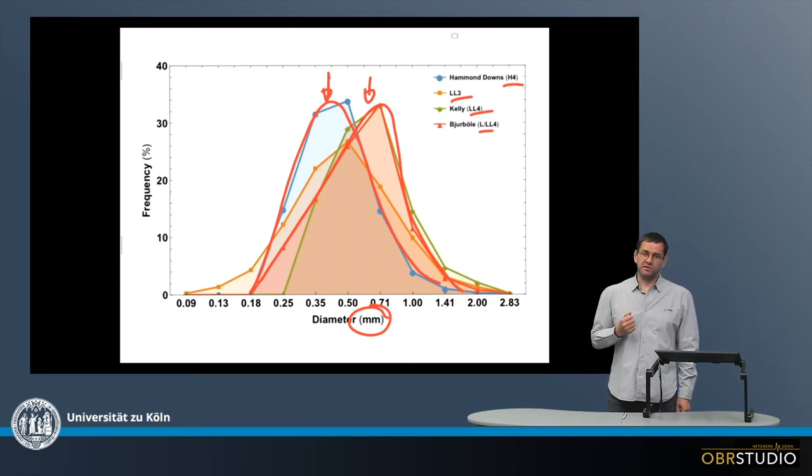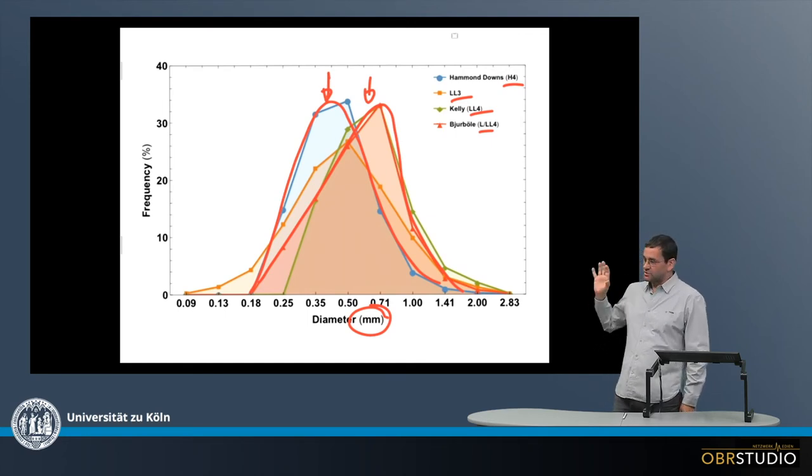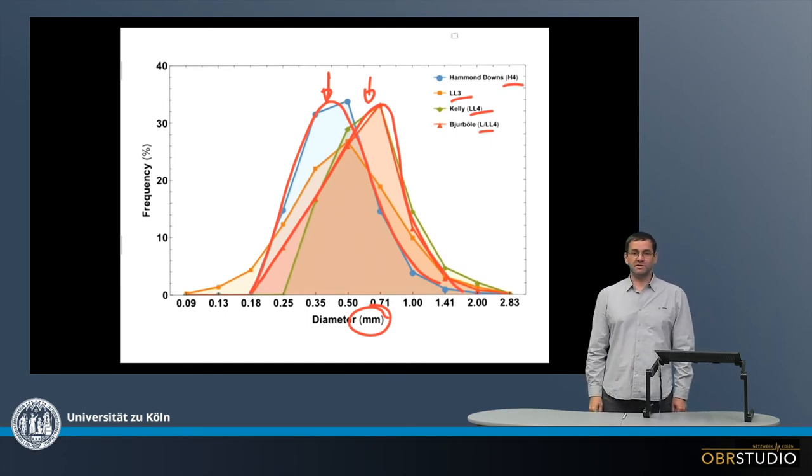This is all what we can learn from chondrule size distributions, which are always different in the various chondrites, of course.